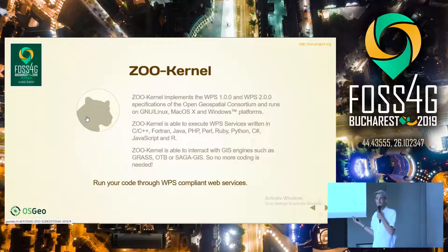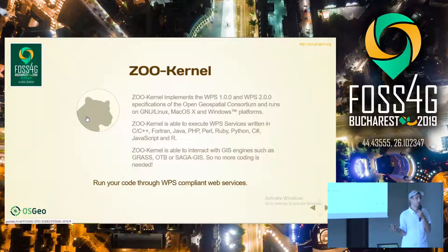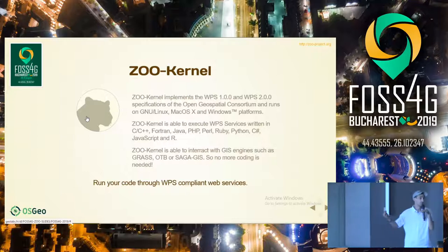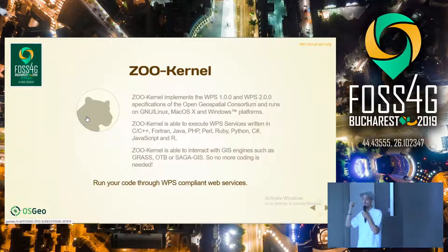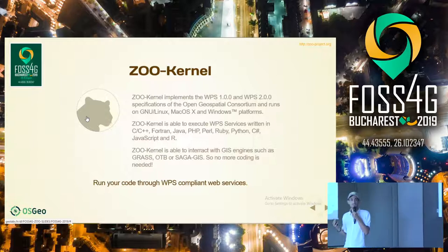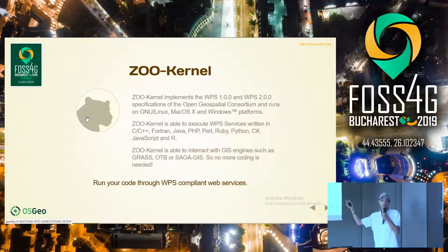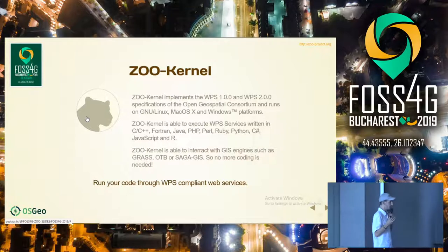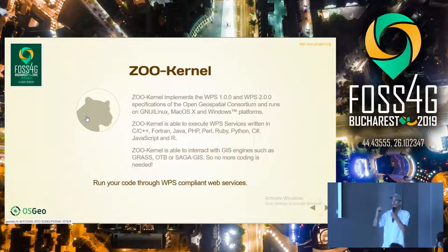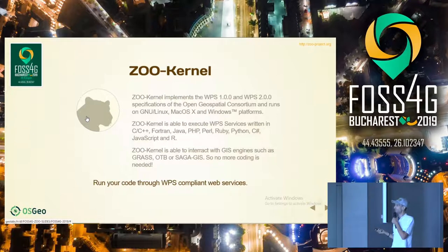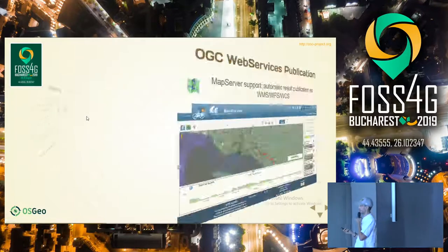What was unfortunate when we were only supporting programming languages was that people still had to write code to make their WPS services available. So we thought about applications that have already been implemented properly, like GrassGIS, Orfeo Toolbox, and SAGA GIS. When I say implemented properly I mean they have internally some kind of catalog, so you can extract all the metadata information from it and publish, using our own tool, simply the ZOO configuration file.